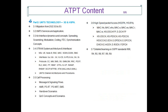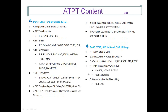Module 3 of ATPT consists of UMTS and HSPA+ technologies. This module would be covered extensively to the core level of each and every protocol and procedure involved in 3G and 3.5G. The protocols covered in this module are listed under sections 3.4 and 3.6.